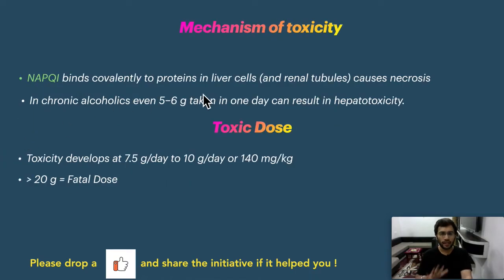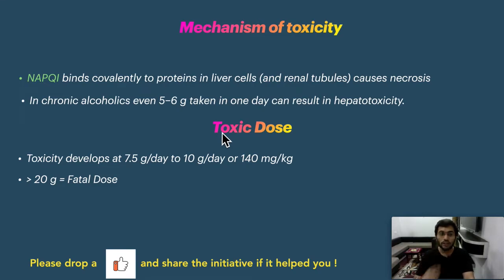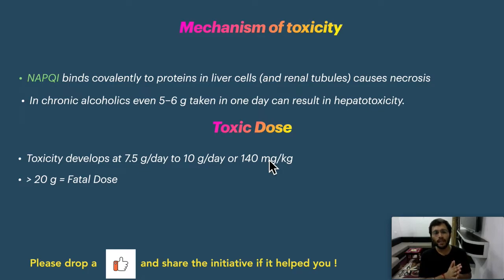Regarding the mechanism of toxicity: NAPQI binds covalently to proteins and causes necrosis and free radical generation. In chronic alcoholics, since alcohol is an enzyme inducer, the CYP pathway is upregulated, leading to increased NAPQI formation. The toxic dose is 7.5 to 10 grams per day, compared to the normal 1 gram dose. By body weight, toxicity occurs at 140 mg/kg, which is useful for calculating doses in pediatric populations. A dose greater than 20 grams can be fatal.